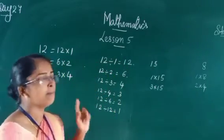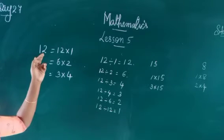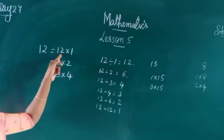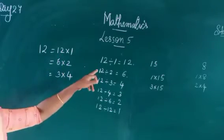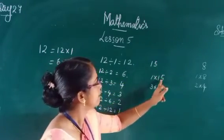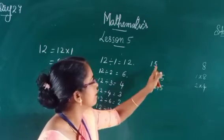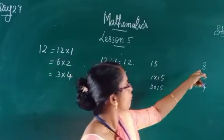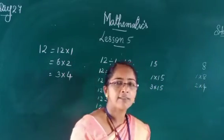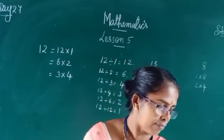Every number is also a factor of itself. For example, for the number 12, one of its factors is 12 itself. In the case of 50, 50 is also one of the factors of 50. In the case of 8, 8 is also a factor of itself. So we can say that every number is a factor of itself.